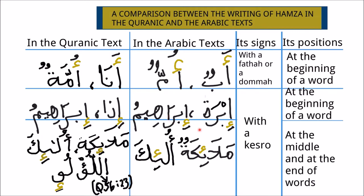Where the difference lies is when the Hamza takes a Kasra and it comes at the middle or at the end of the word. Then, Hamza in the Arabic text is written upon a dotless Ya. As you have in this example, Mala'ikatun — here Hamza is written upon a dotless Ya, and the Kasra comes below the Ya. Also in Ula'ikat, Hamza is written above a dotless Ya, and the Kasra is written below the Ya.